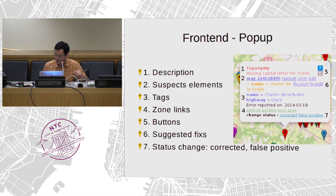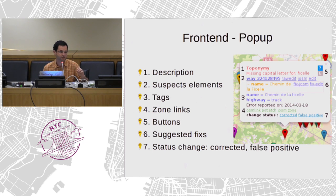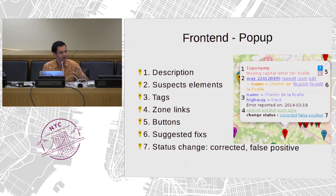In the upper part of the popup, there is a link to the OpenStreetMap wiki, where there is a page with a list of errors and an explanation about the error and how to fix it.